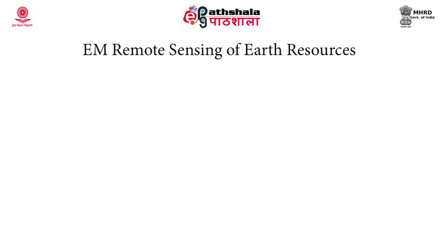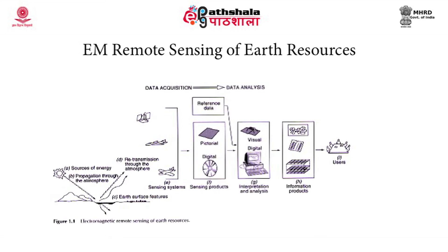This figure deals with the overall principle and mechanism of remote sensing. First we need to have a source of energy for carrying out remote sensing studies. This is followed by the propagation of these energy radiations through the atmosphere and their interaction with Earth's surface features. Both these stages involve the interaction of radiations with the atmosphere as well as with the Earth's surface features. After interaction with the Earth's surface features, the radiations are retransported through the atmosphere to reach the sensors — which could be aerial photography or spaceborne. Overall, from source of energy to transmission through the atmosphere to reaching the sensors comprises the data acquisition stage.